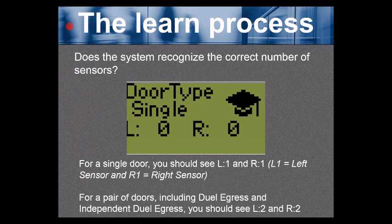Loading process continued. Does the system recognize the correct number of sensors? For a single door, you should see L1 and R1. Here we see L0 and R0. I'll touch on that in just a minute.